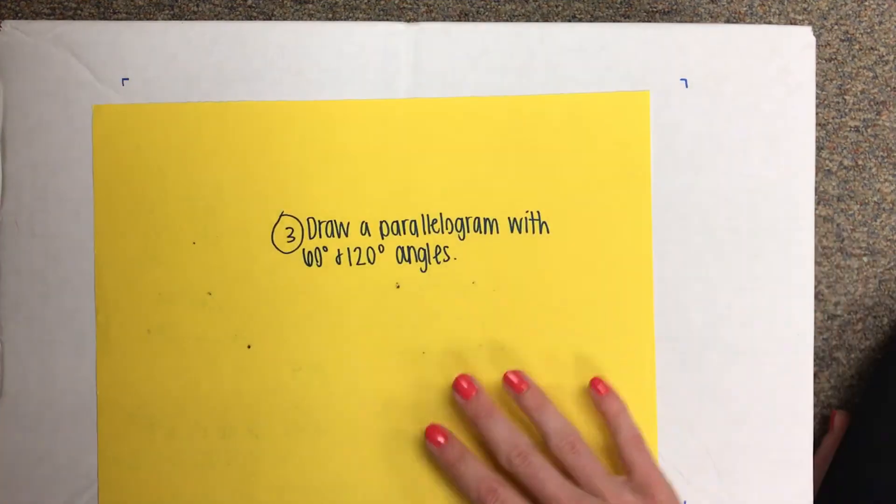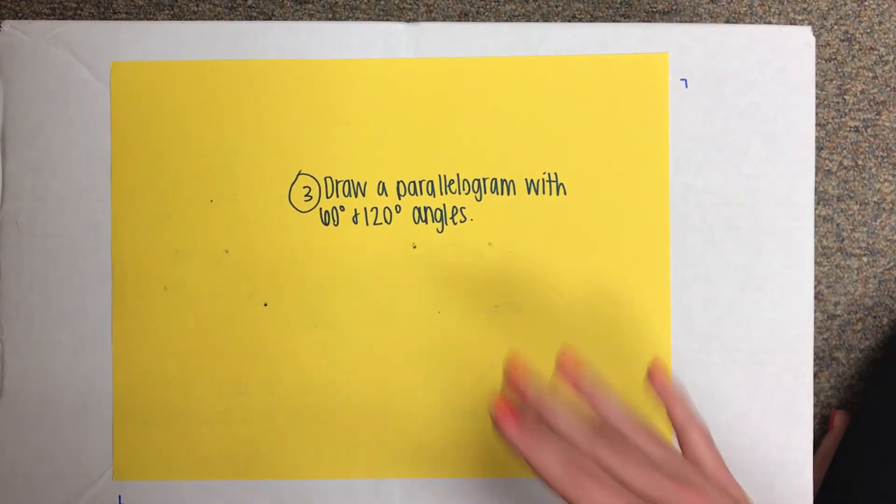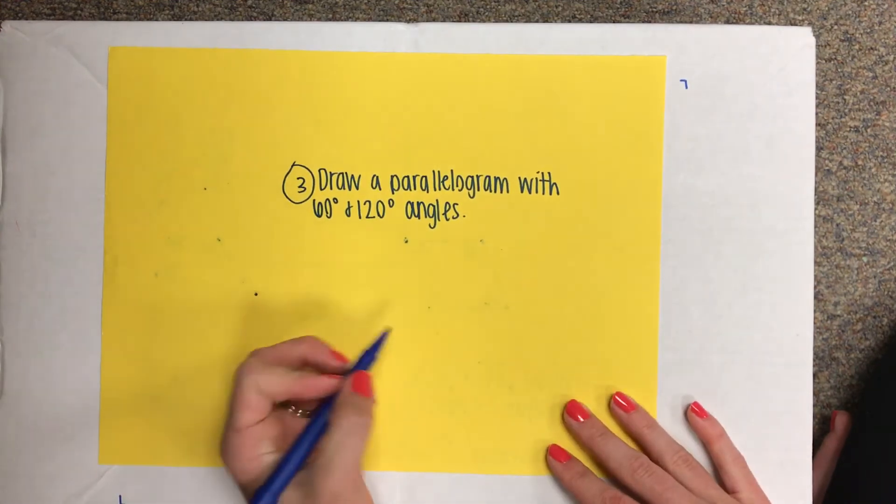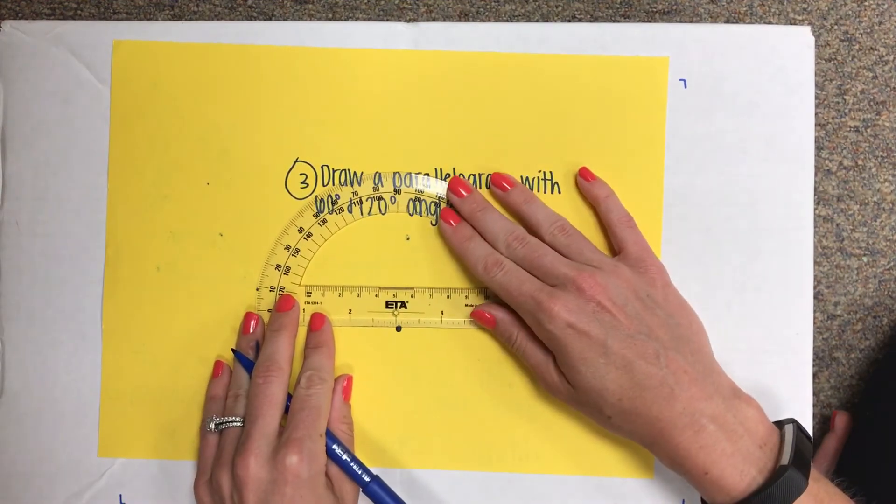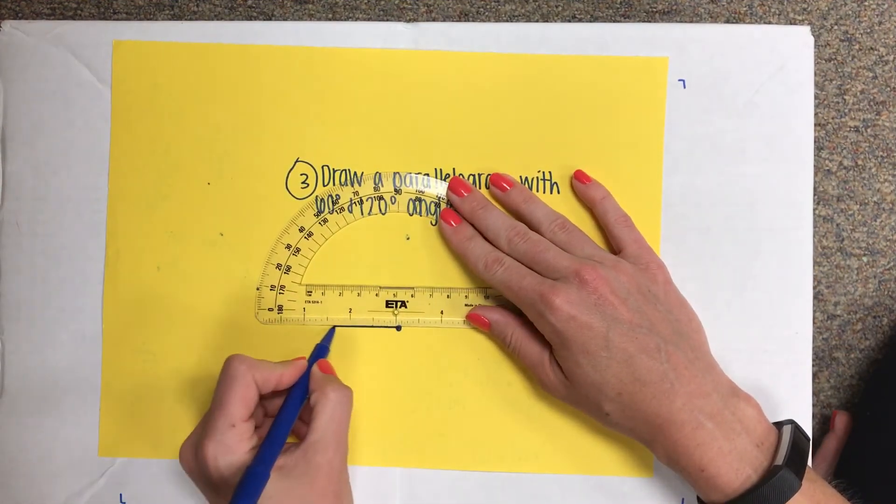The last one we're going to try is number three, and that's drawing another parallelogram, but this time we're going to do 60 and 120 degree angles. Remember, you always start drawing your vertex and your straight line for your angle or the ray,